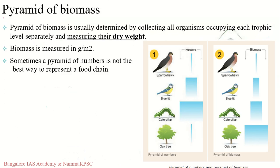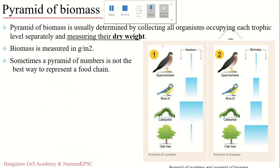Next we move on to the pyramid of biomass, which always gives a better understanding of the energy contained at each level compared to the pyramid of numbers. The pyramid of biomass is considered to overcome the shortcomings of the pyramid of numbers, and here we consider the total weight of all organisms at each trophic level.